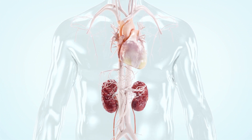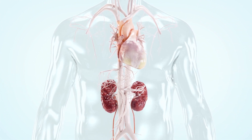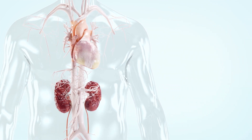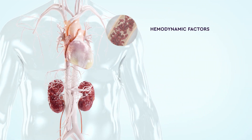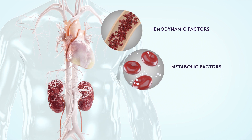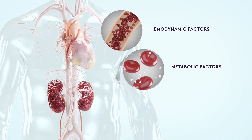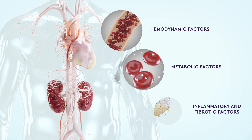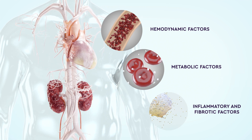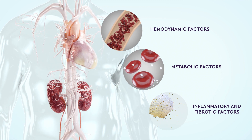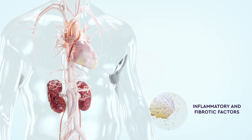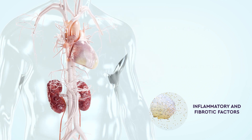These three driver categories are: hemodynamic factors like increased blood pressure, metabolic factors like elevated blood glucose, and inflammatory and fibrotic factors like pro-inflammatory and pro-fibrotic proteins. However, one of these categories is unaddressed by the current standard of care — inflammation and fibrosis in the kidneys.